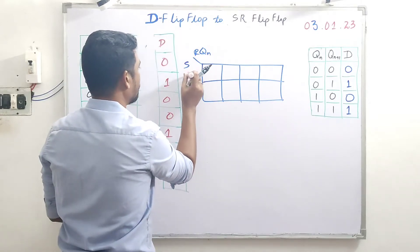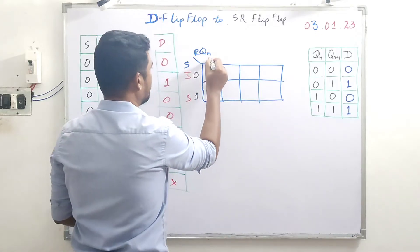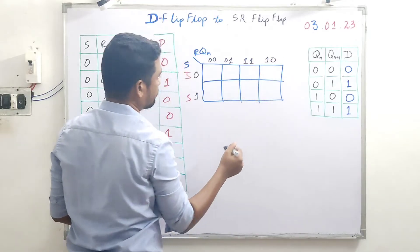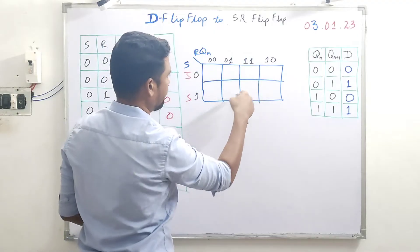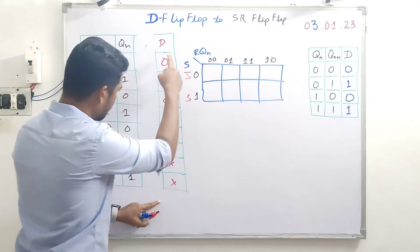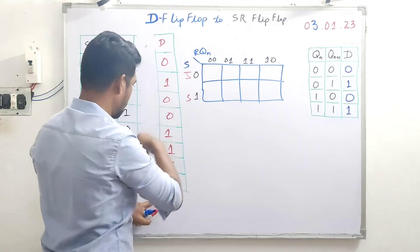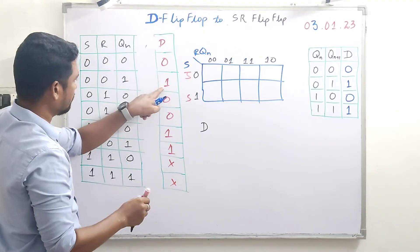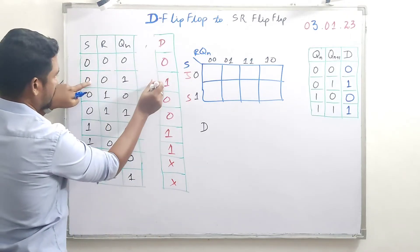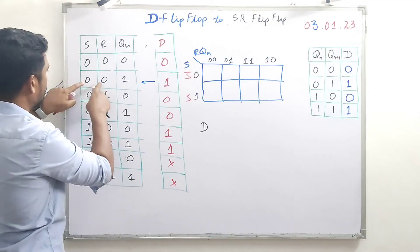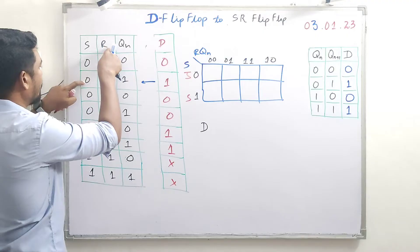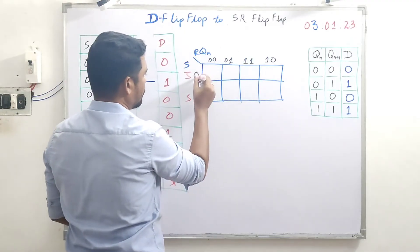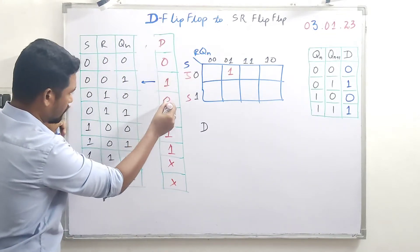Setting up the K-map combinations: 0-0 continues to 0-1, then 1-1, then 1-0. Now we plug in values. We have a 1 in the table for which combination? For S=0, R=0, Qn=1 — that's the 0-0-1 cell — we place a 1 there. For S=0, R=0, Qn=0 we place a 0.